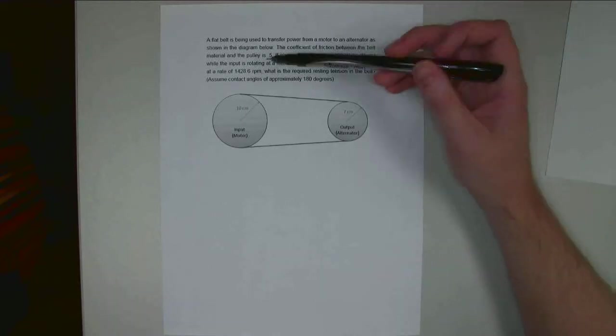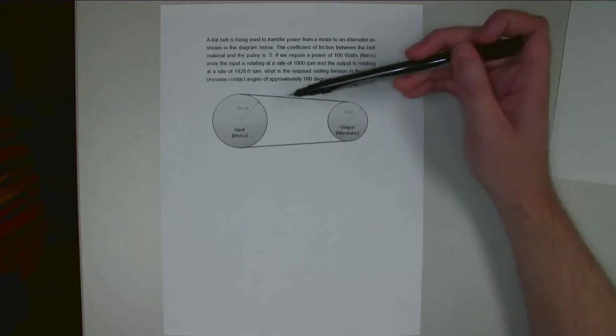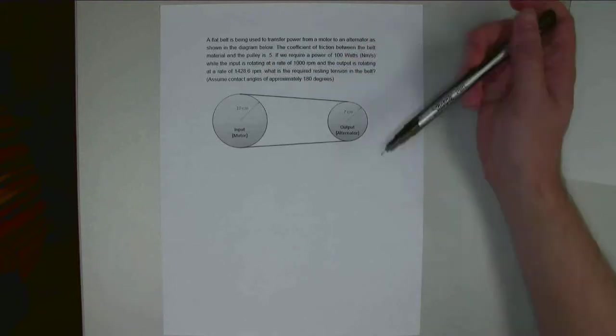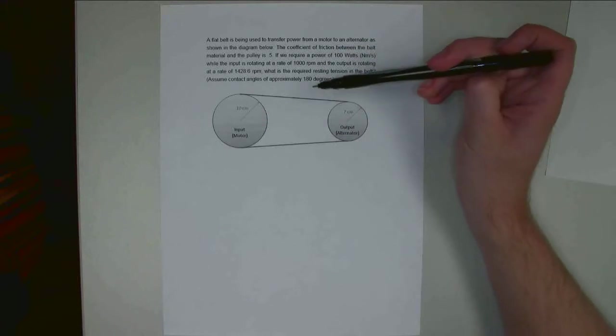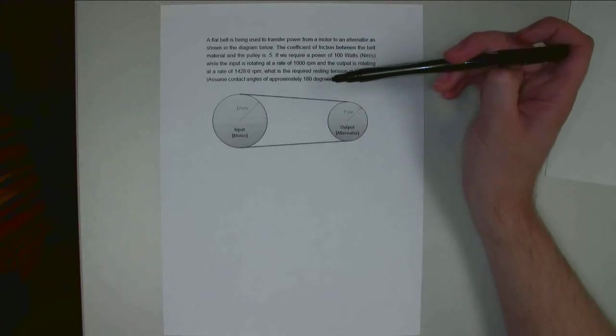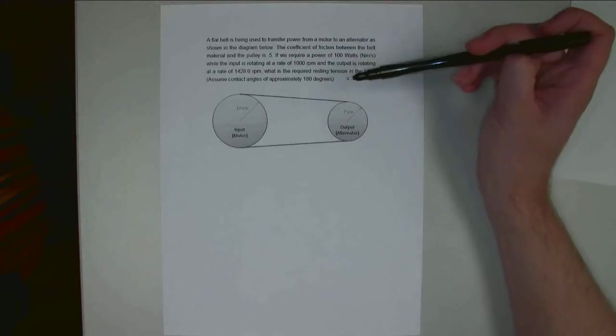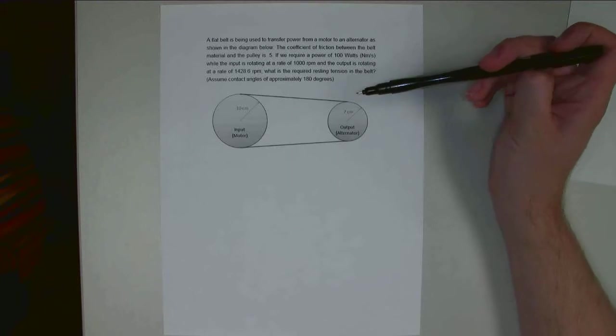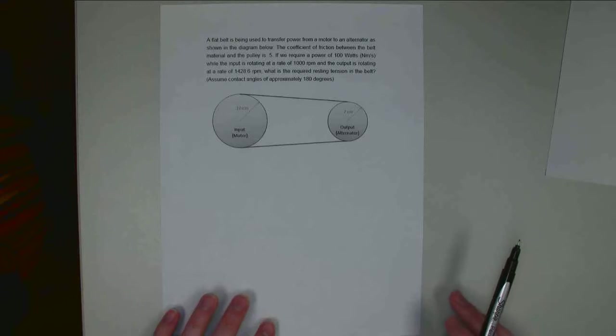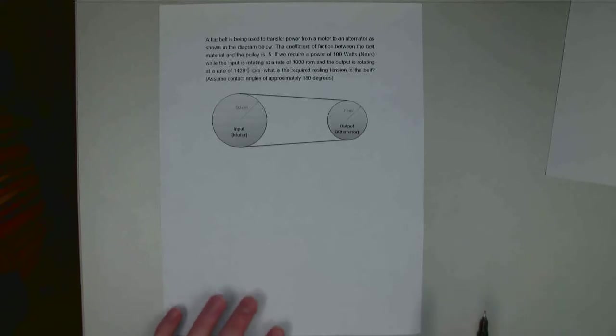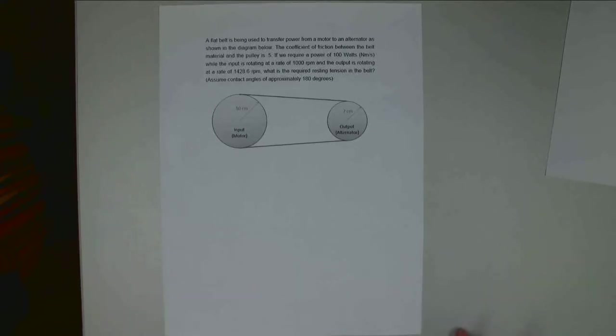So the output is going to be rotating at 1,428.6 RPM if the input is at 1,000. We want to find the required resting tension for this belt so that it's not going to slip. If the resting tension is too low, this whole thing is going to slip before I actually transfer any power. If it is too high, then I basically just need a stronger belt than what it would have. So I want to figure out what is the minimum resting tension in this belt.